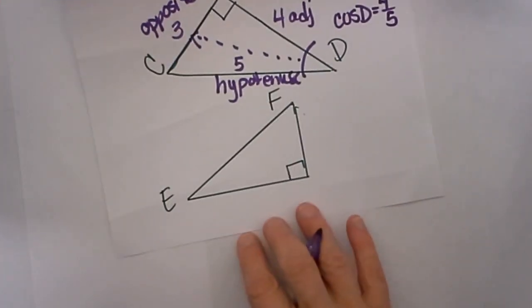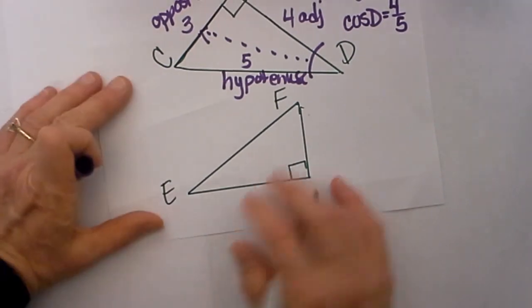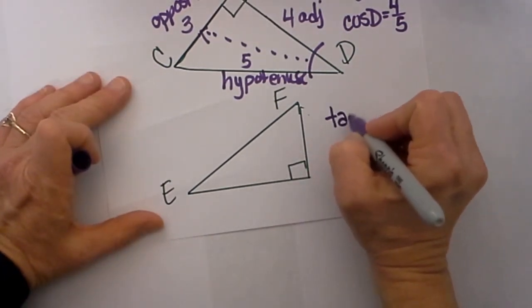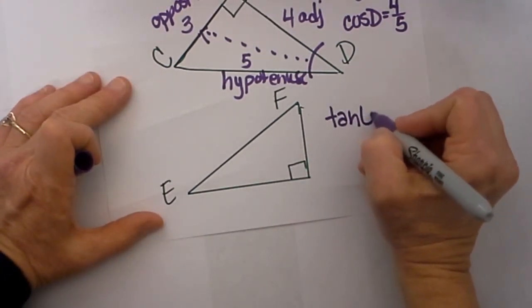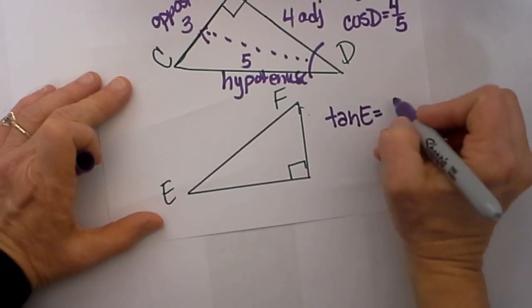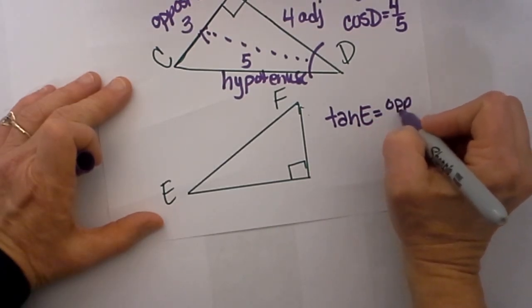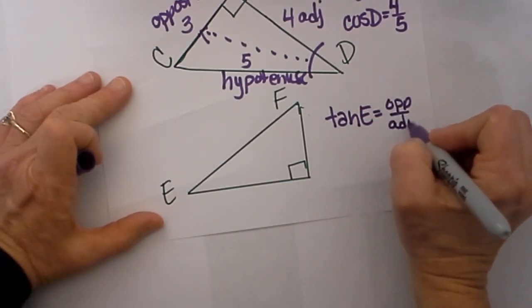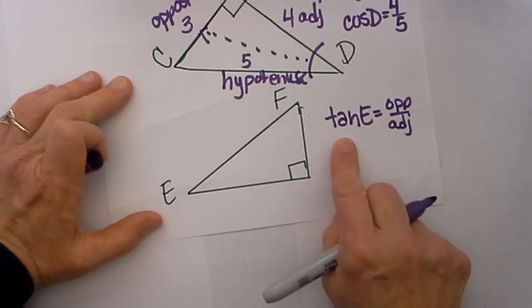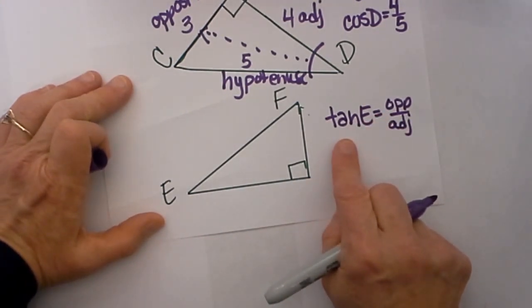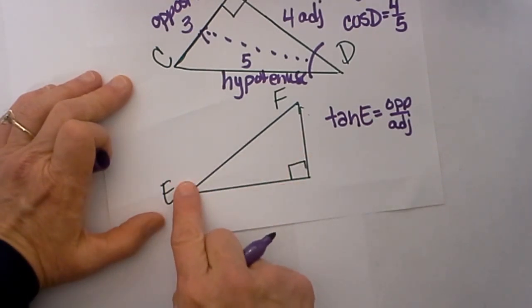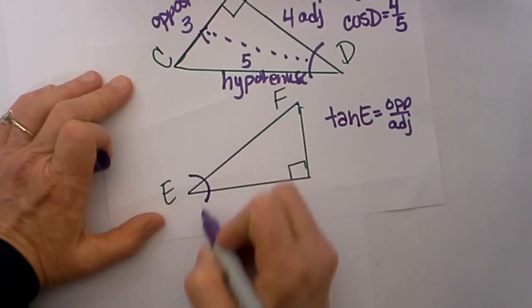Now let's go down and look at tangent. Tangent of E is going to be the ratio of opposite over adjacent. Tangent is the one trig function that does not use a hypotenuse. So let's start at angle E, so we are starting from this angle, so let's mark the angle.